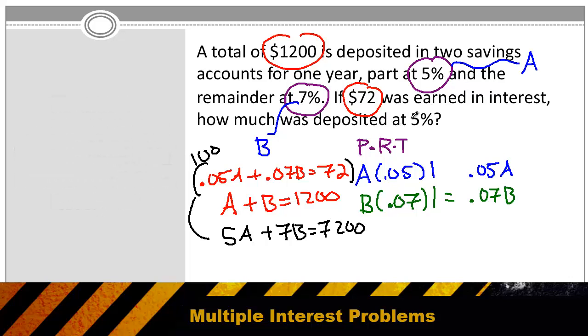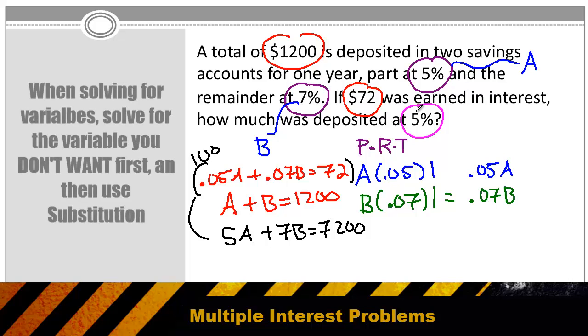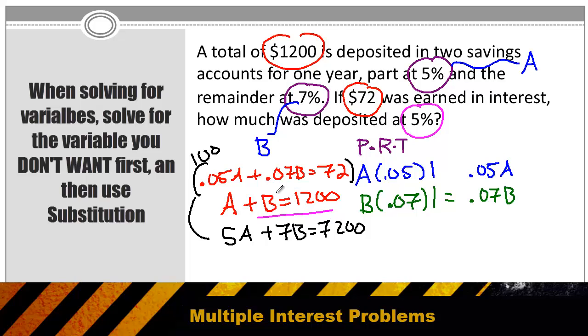Now the question is asking me how much I invested at 5%, or they want to know how much was invested in account A. Since I'm eventually solving for A, I first want to solve for B and then use substitution. So using my top equation and solving for B, I can subtract A from both sides. And I can write the equation that B is equal to 1200 minus A.